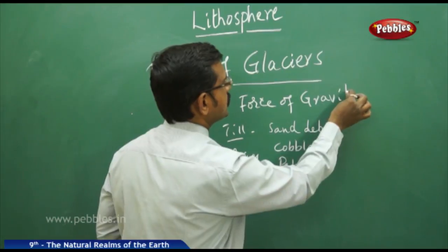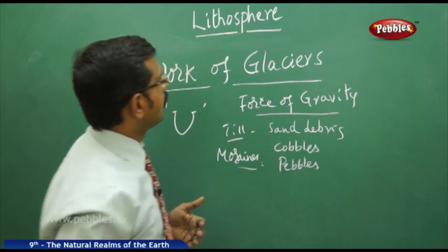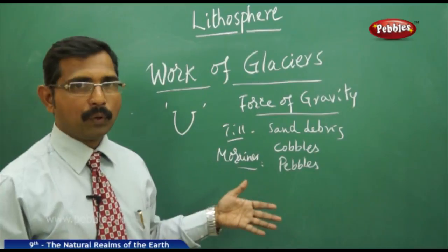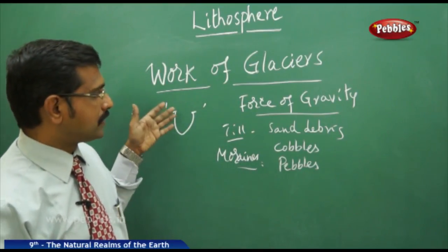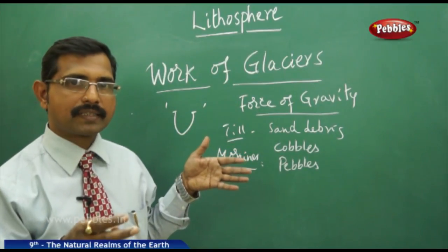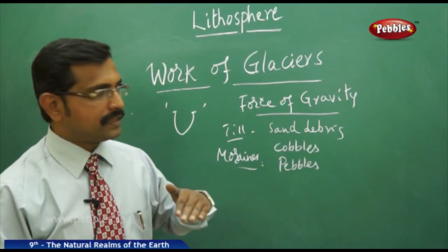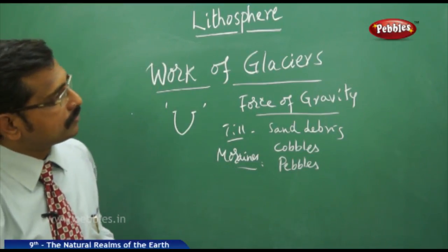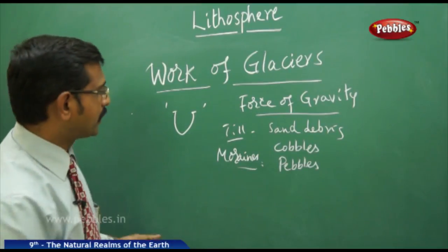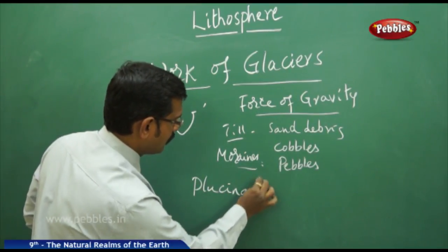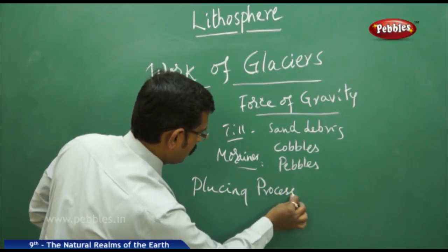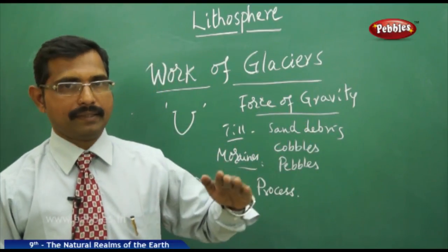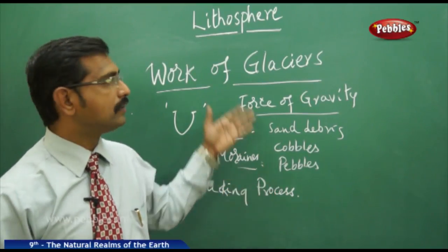Due to gravitational force, glaciers move, and their speed depends on the size of the ice mass. This huge ice mass acts as an abrasive on the bedrock. The process of erosion by glaciers is called plucking — the plucking process, where the ice removes parts of the bedrock material. Plucking is the main erosion process caused by glaciers.